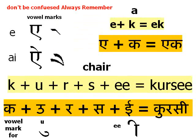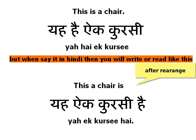Eek — in Hindi we will say eek, meaning 'a' or 'one'. 'A' plus 'k' sound becomes eek. Chair in Hindi we will say kursi — 'k' plus 'uo' plus 'r' plus 's' plus 'ee' sound becomes kursi.